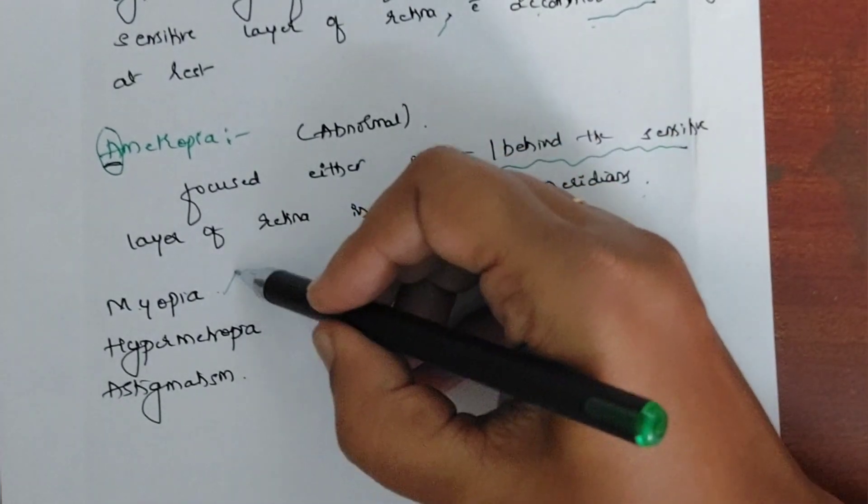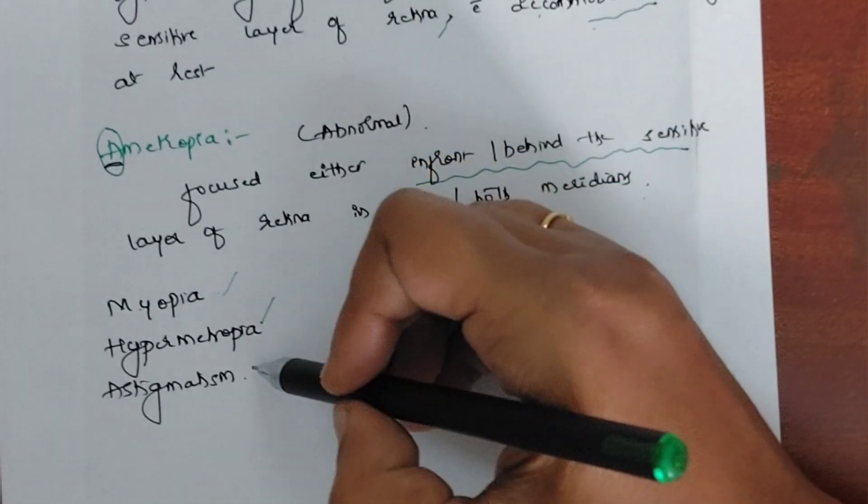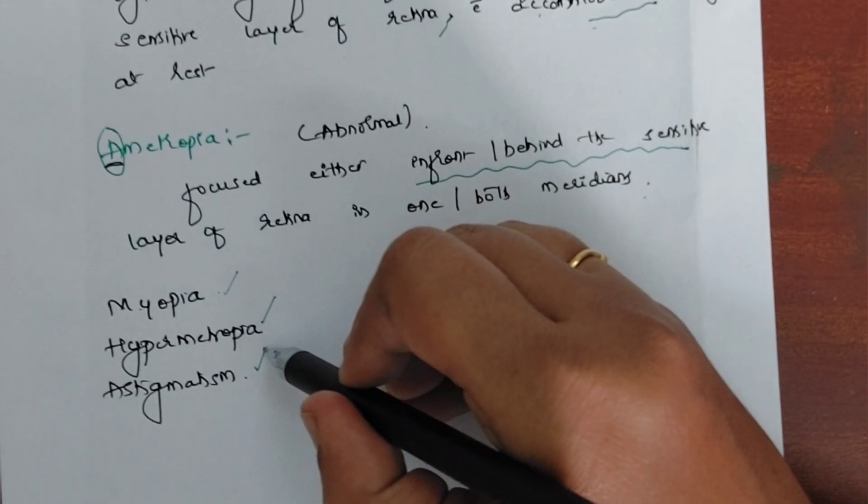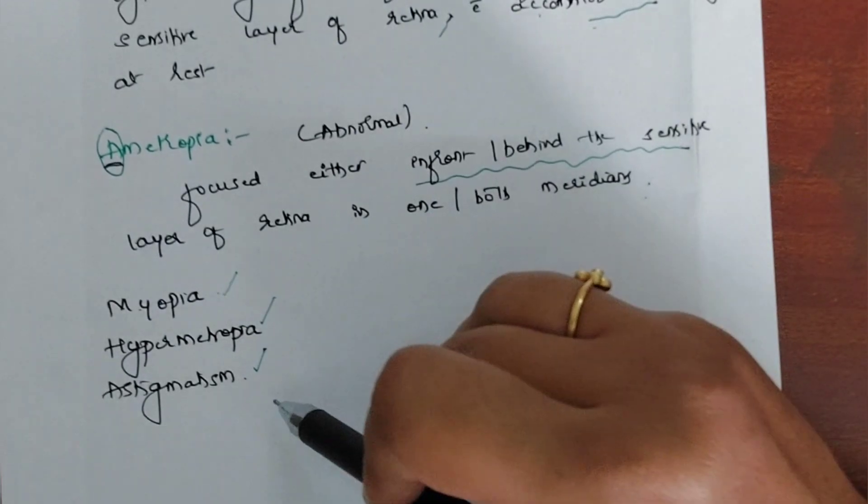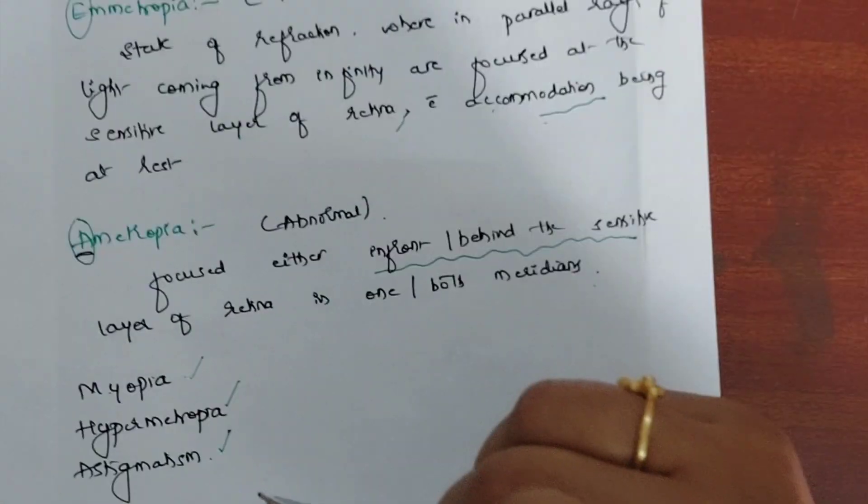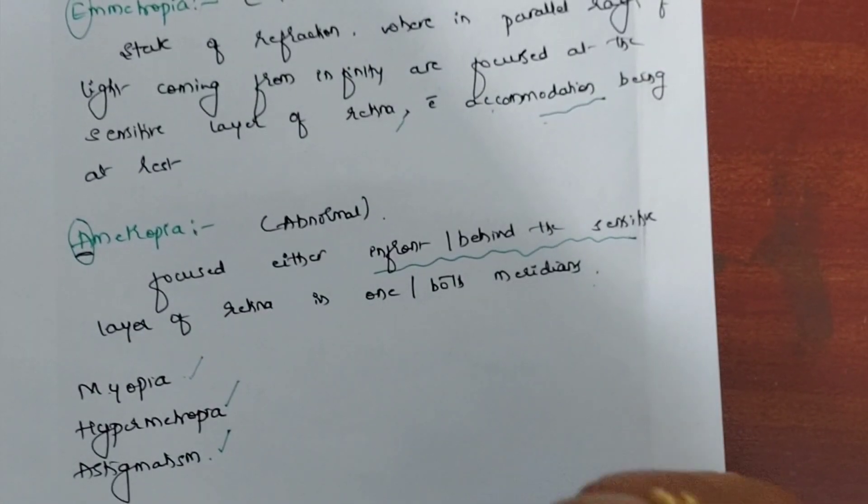And in this chapter, myopia can be asked as a main question, hypermetropia and astigmatism can also be asked as main questions. I have videos which explain in detail about myopia, hypermetropia, and astigmatism in my playlist. Please go through the videos to answer for the main question.